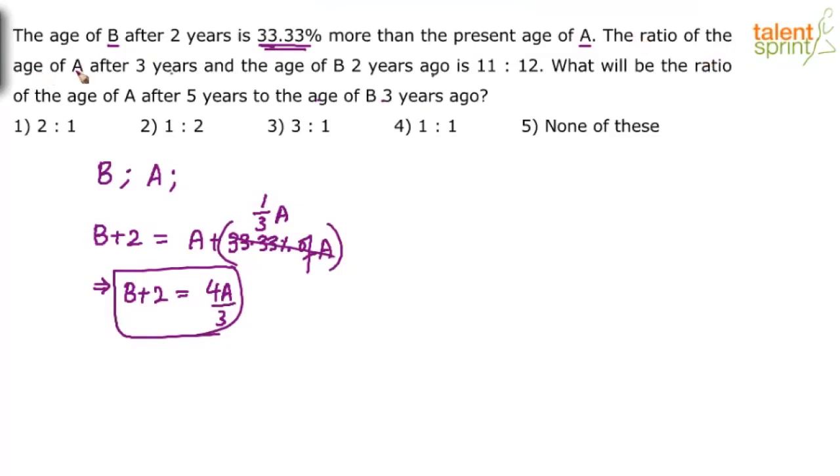Then it says the ratio of the age of A after 3 years. Age of A after 3 years is A plus 3. And the age of B 2 years ago. What is the age of B 2 years ago? B minus 2. So the ratio of A plus 3 and B minus 2 is 11 is to 12. This is equal to 11 is to 12.